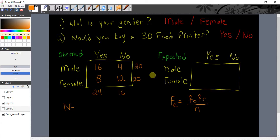You can see here that there's probably a difference between males and females because 16 of our 20 males said yes to the question, would you buy a 3D food printer? And four of our males said no. Whereas we had eight females that said yes to the question, would you buy a 3D food printer? But 12 females said no. Just looking at the data, you can say it looks like males are more interested in buying a 3D food printer than females.